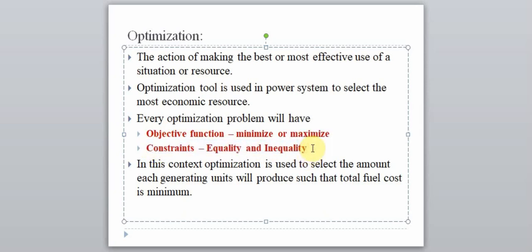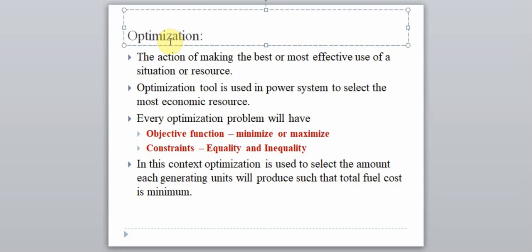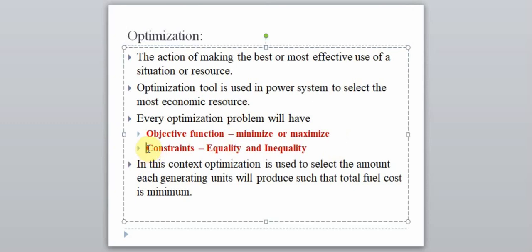The optimization problem will also have certain constraints, though the presence of constraints is not mandatory. Some optimization problems may not have constraints — such a problem we call an unconstrained optimization problem. In the economic dispatch problem we do have a constraint, so we call it a constrained optimization problem. This constraint can be either an equality constraint or an inequality constraint, or both can be present depending on the problem formulation.